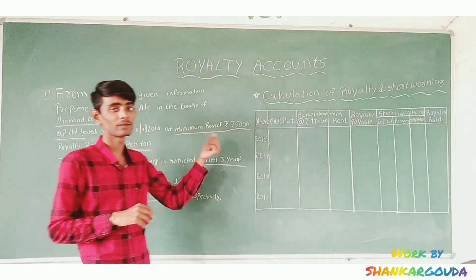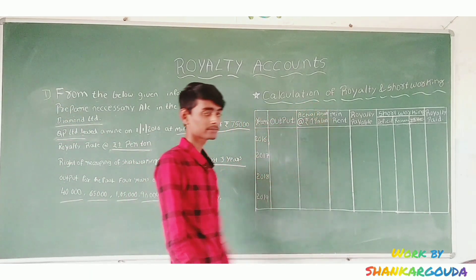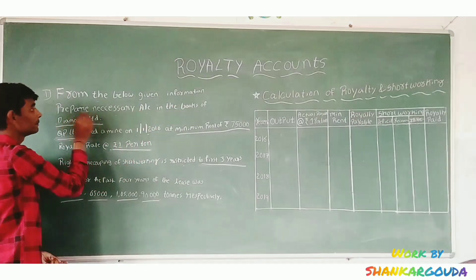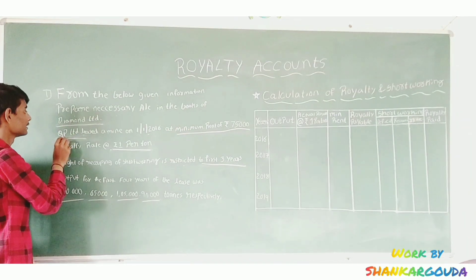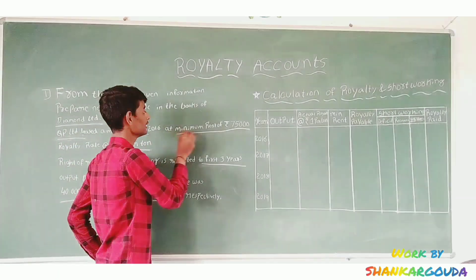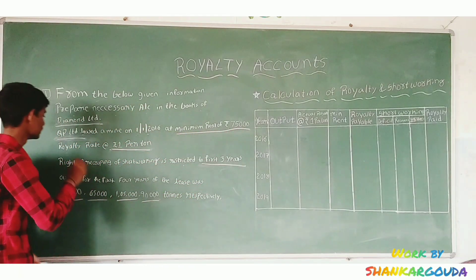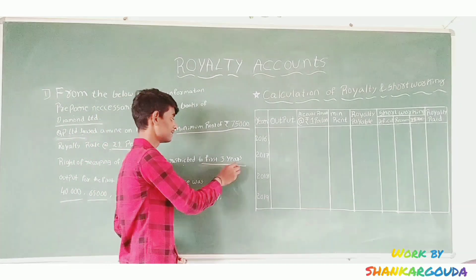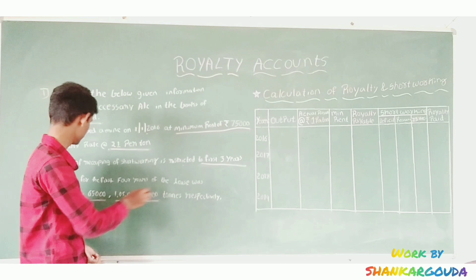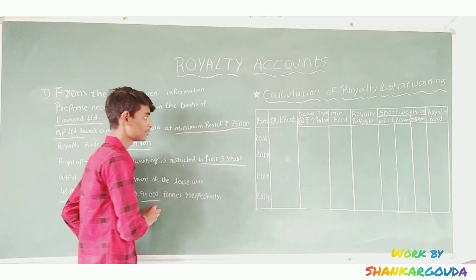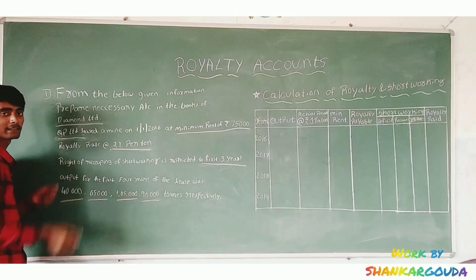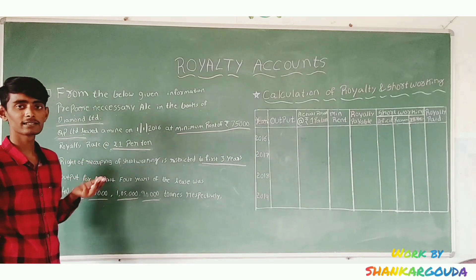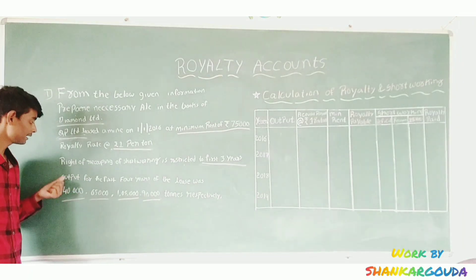In this video I am going to show a new problem of Royalty Accounts. First, we have to understand the question correctly. From the given information, we have to prepare the books of the lessee and lessor. We have to identify the royalty rate, minimum rent, recoupment of short working restriction, and the output for the years.